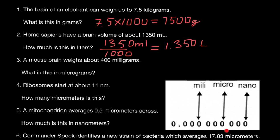Micro is 1,000 times smaller than milli, and it means one-millionth of something. So after the decimal point we have six zeros. And nano means one-billionth of something — nano is 1,000 times smaller than micro, and 1,000,000 times smaller than milli. We can also say that micro is 1,000 times bigger than nano, and milli is 1,000,000 times bigger than nano.